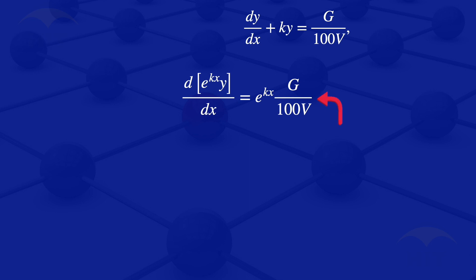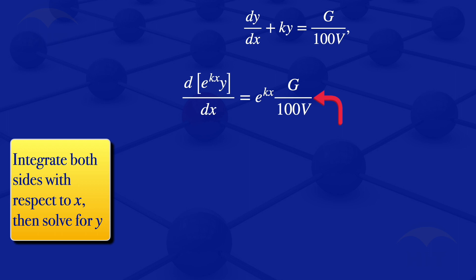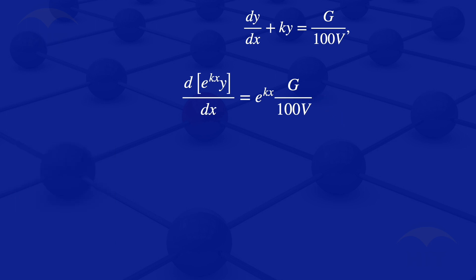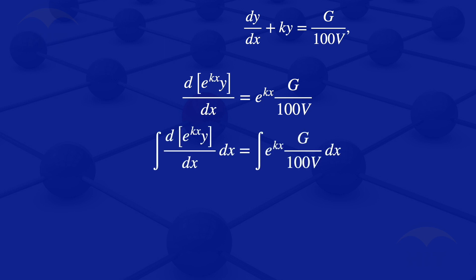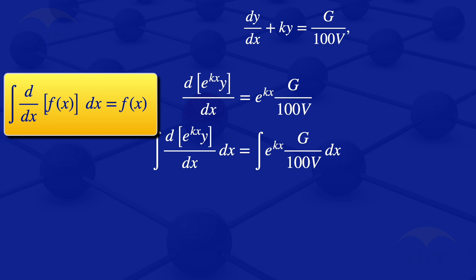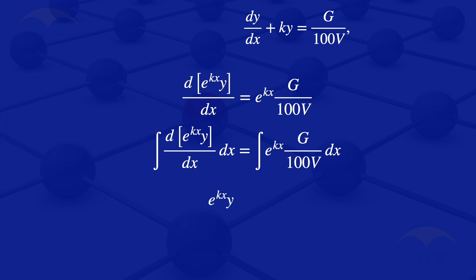The next step is to integrate both sides of this equation with respect to x and then solve for y. The integral of the derivative of exponent of kx times y with respect to x equals the integral of exponent of kx times g divided by 100v. On the left-hand side, integrating the derivative of a function gives the function itself, so we obtain exponent of kx times y.